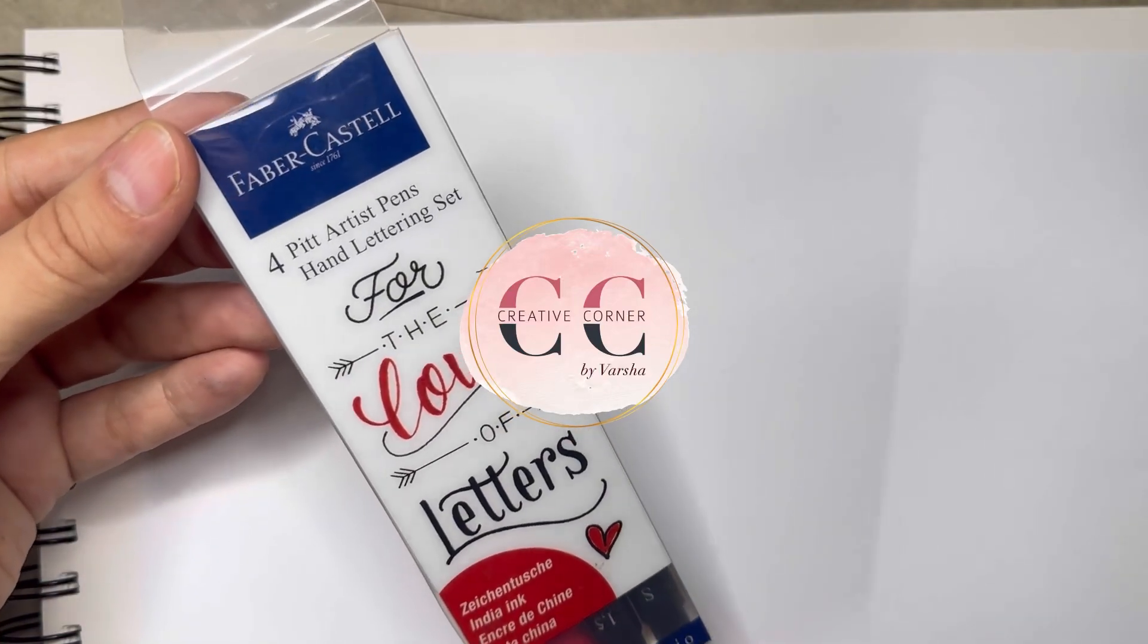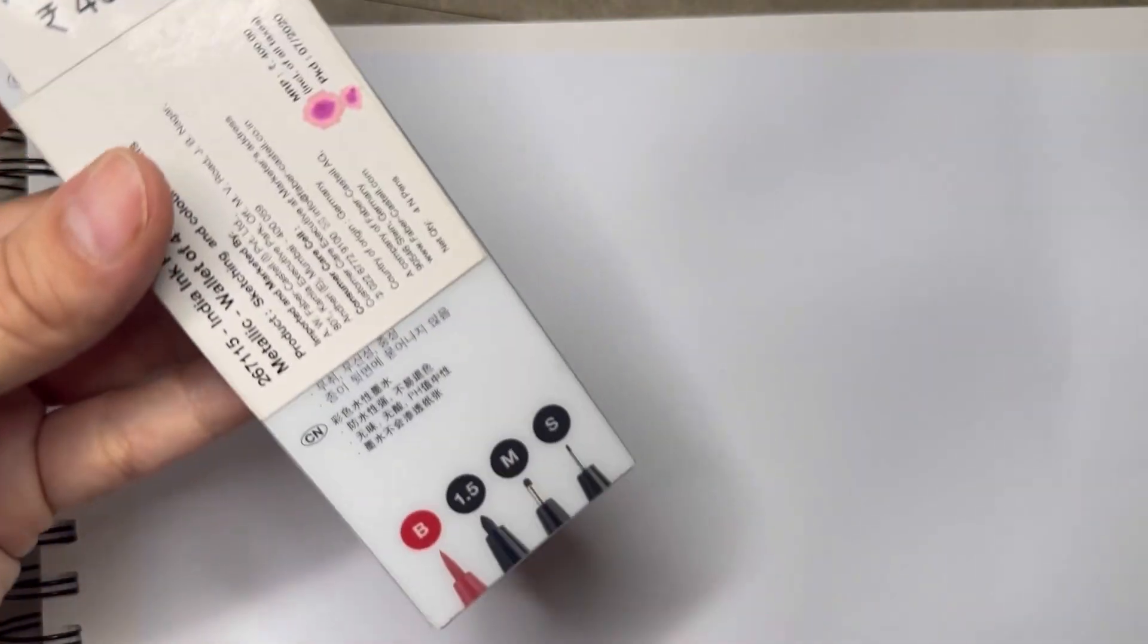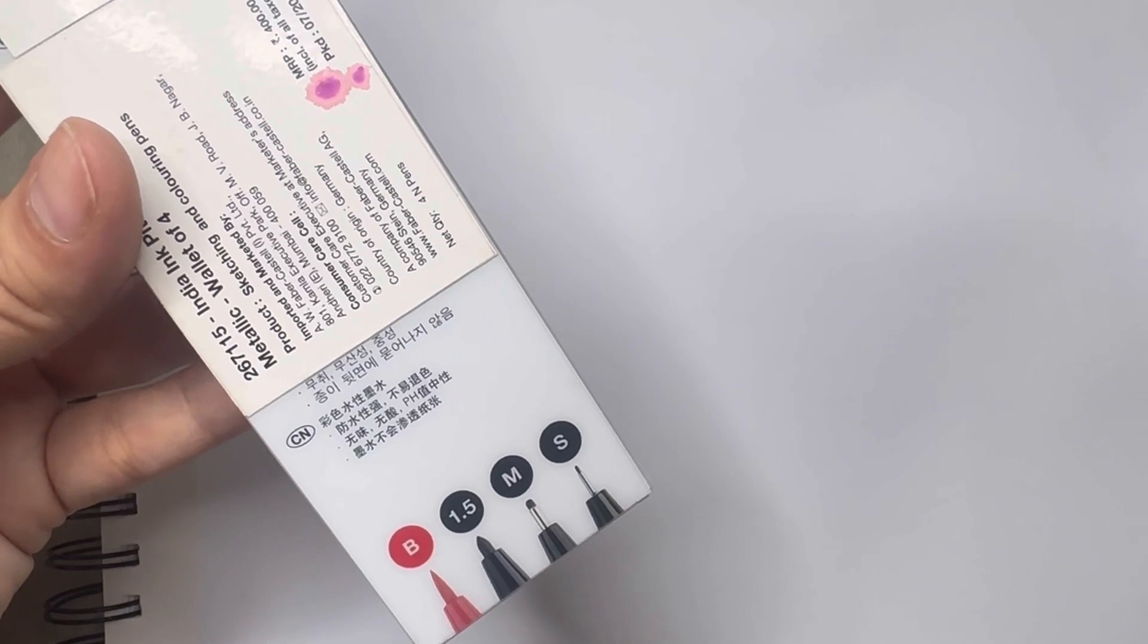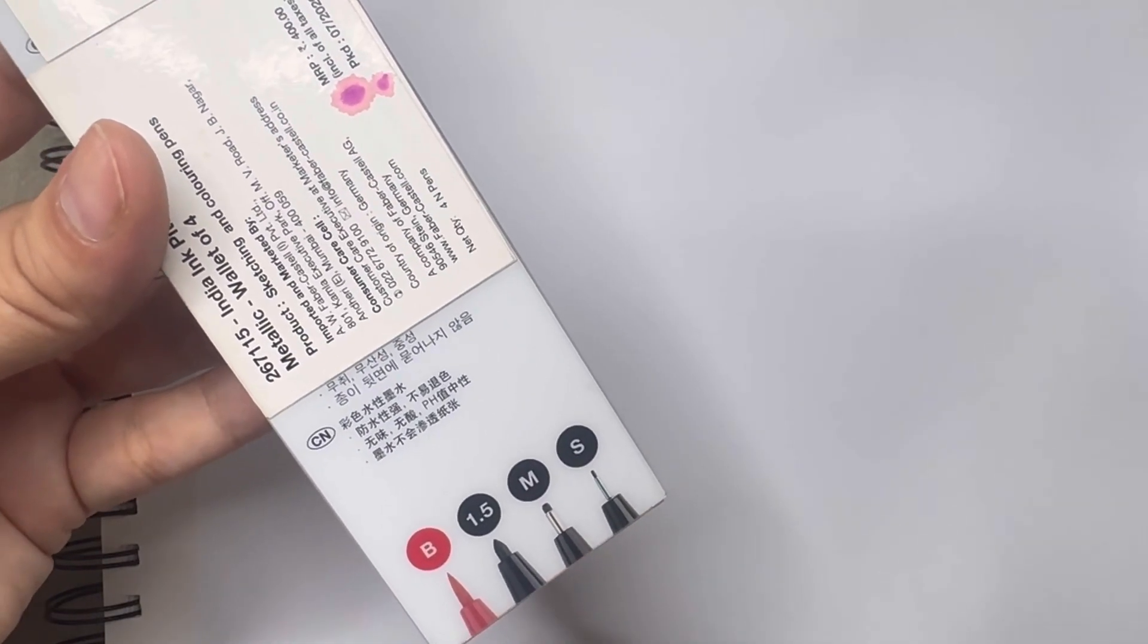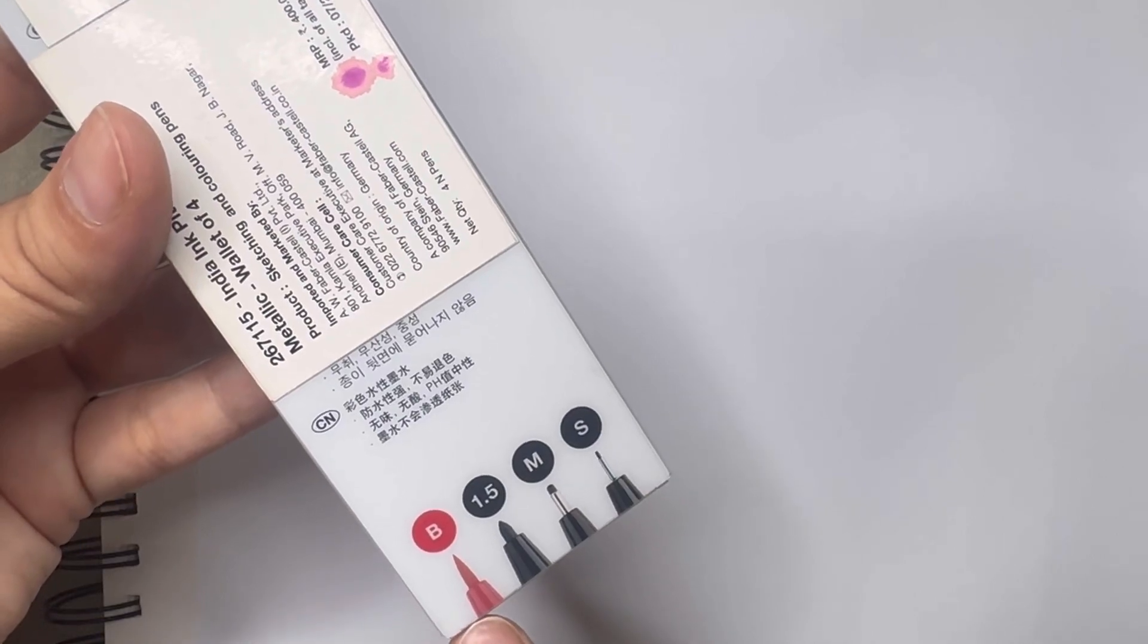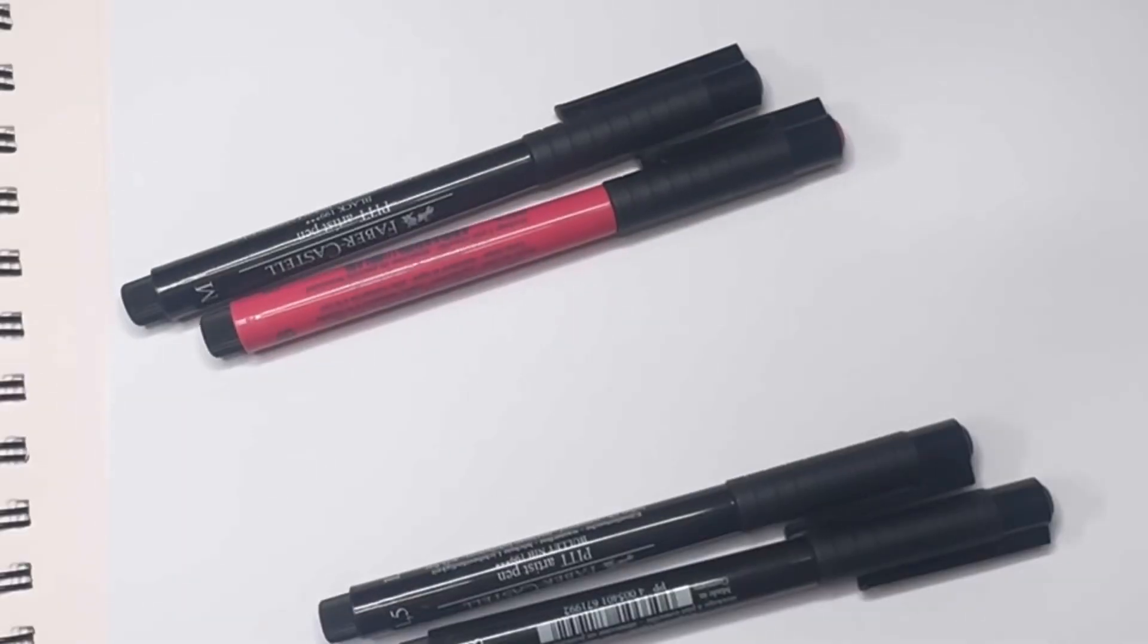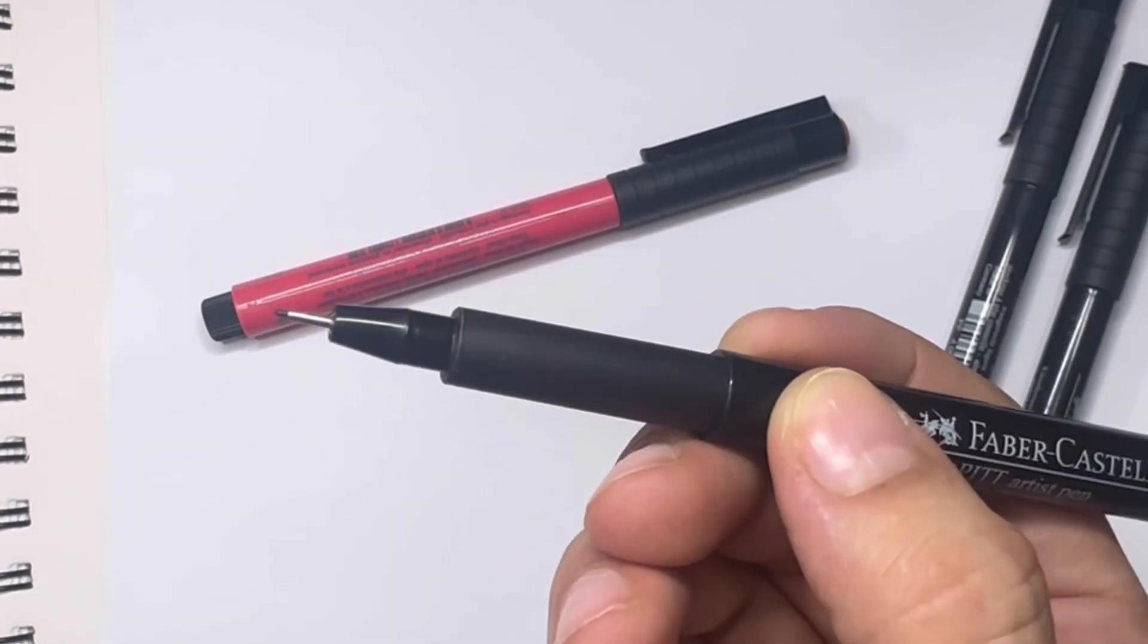Hi guys, welcome to my YouTube channel. Today I'm going to review this Faber-Castell Pitt Artist hand lettering set. We have four pens here: S, M, 1.5, and B. S and M are fineliners, 1.5 is a sketch pen, and the B in red color is a brush pen. This set is priced at 400 rupees, that means 100 rupees each pen. Let's see how it works, starting with the S tip pen.